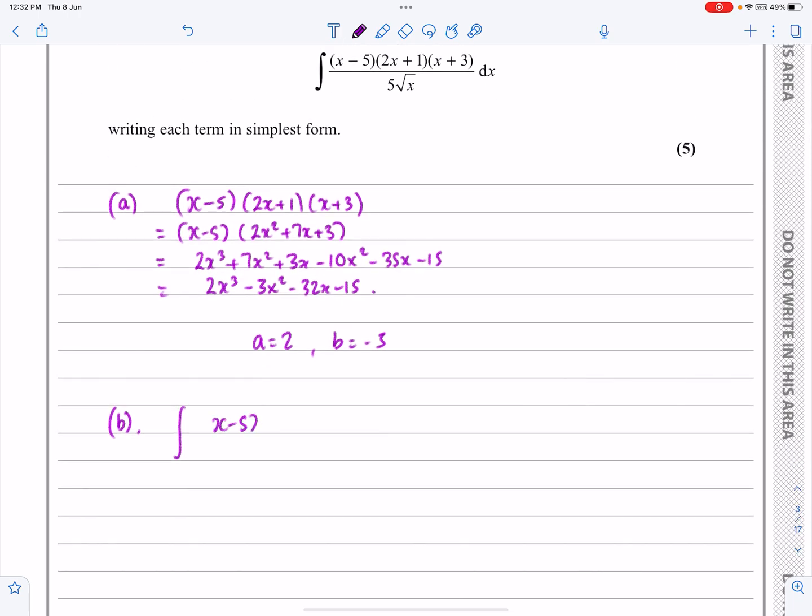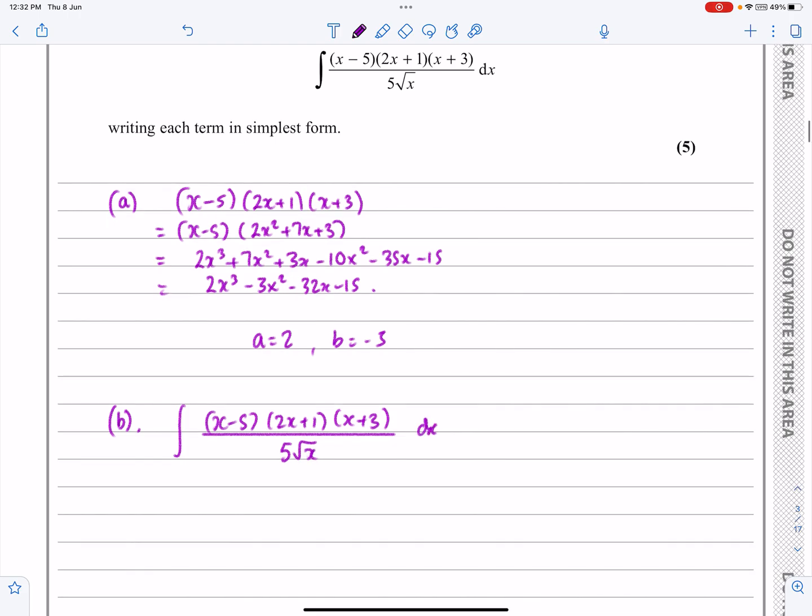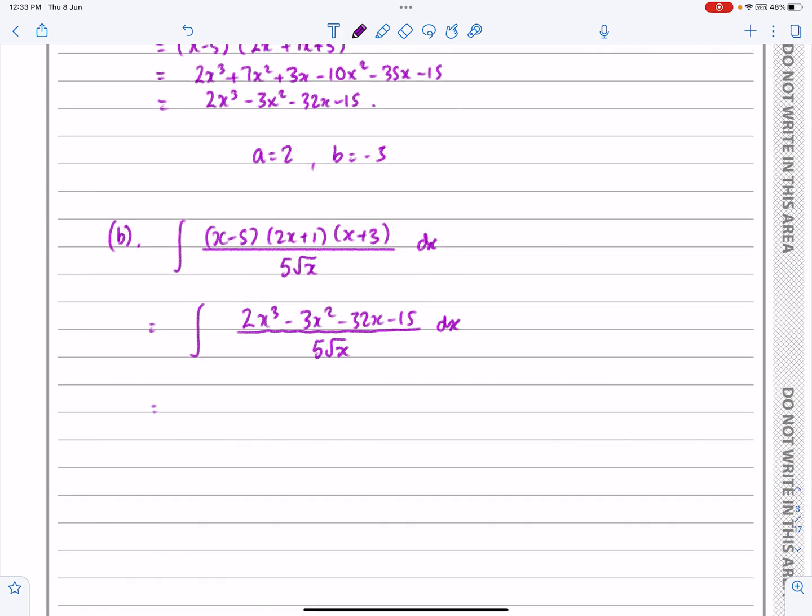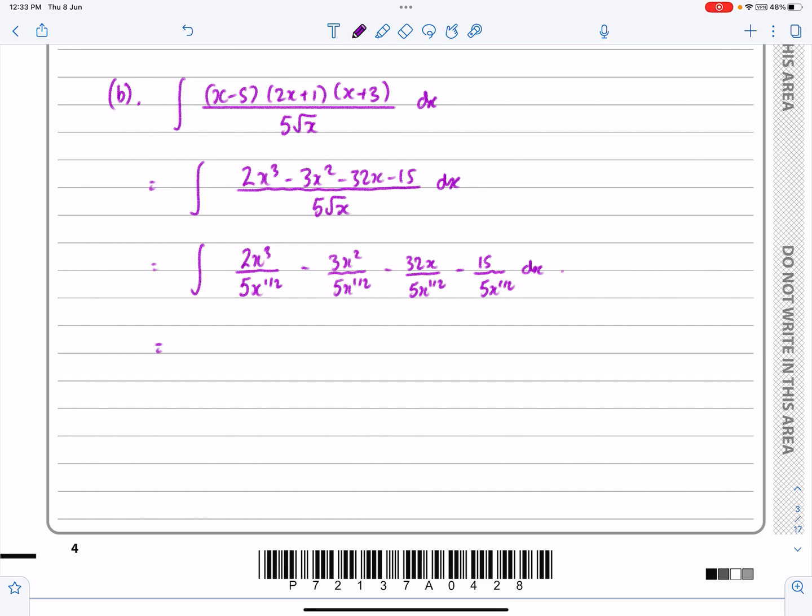The integral of (x - 5)(2x + 1)(x + 3) all over 5√x dx is the same as the integral of the bit we just worked out. So, 2x³ - 3x² - 32x - 15, all divided by 5√x. It's taking a bit of time, isn't it, just to do all this. This is more just explaining it to you. If I was doing it myself, I'd probably miss out that step and actually just go ahead and do it.